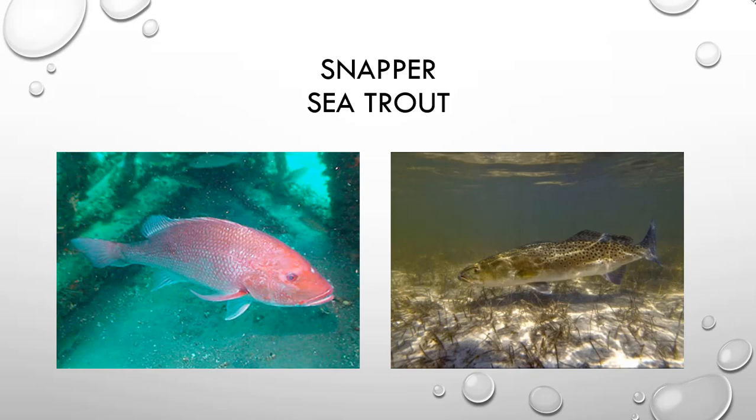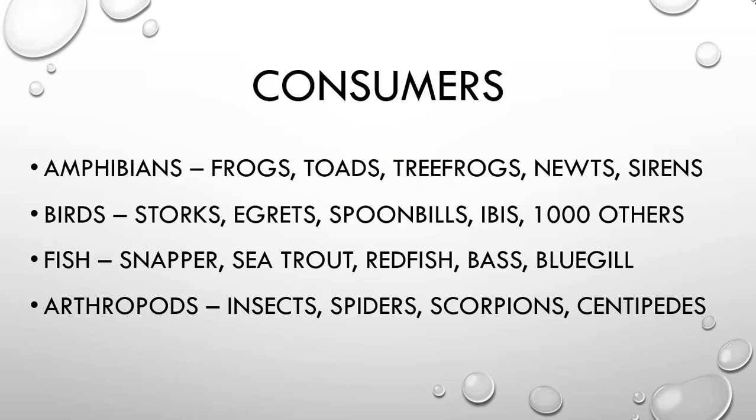Because there's so much water, there are also a lot of fish. Common fish found in the Everglades that you can fish for in the national park include red snapper, sea trout, redfish, bass, and bluegill. The snapper are actually gigantic — almost two feet long. The sea trout is special because it has bottom teeth and a large front fang.